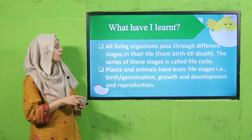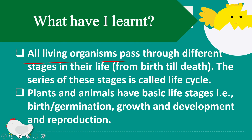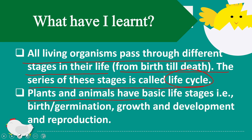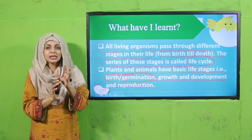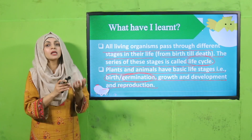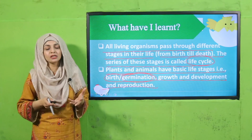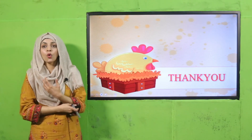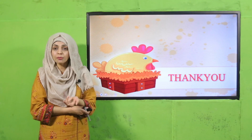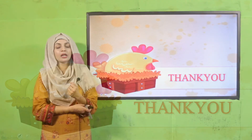What we learned today: all living organisms pass through different stages in their lives from birth till death — the series of these stages is called a life cycle. Plants and animals have basic life stages; in plants it is germination, growth and development, and reproduction. With pictures, you can now easily identify baby versus mature plants and animals and their differences. I hope you fully understood and enjoyed the project. Keep everybody around you safe — have a good day, thank you so much!